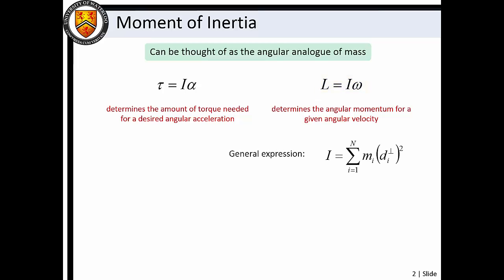We can calculate the moment of inertia about an axis by multiplying particle mass and the square of its perpendicular distance from the axis of rotation, and then summing over all particles.